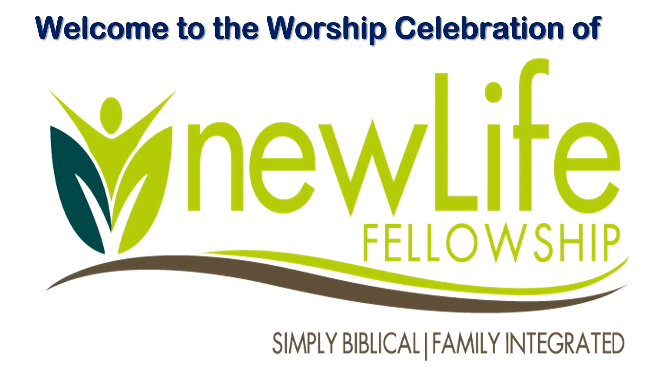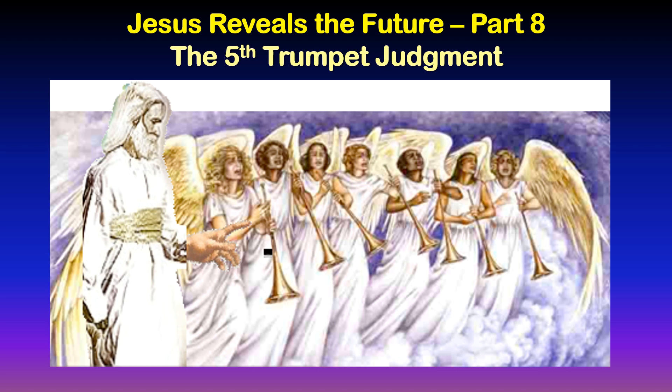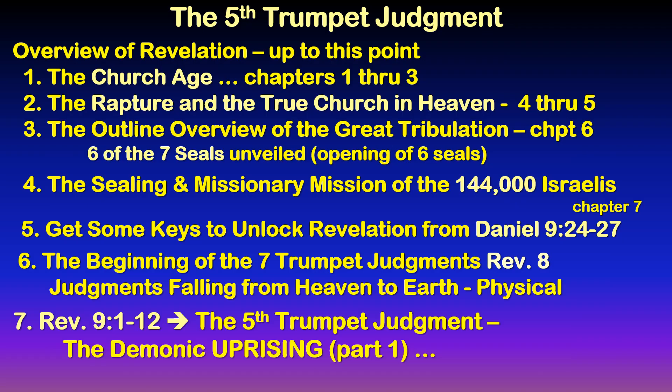We have been studying through the book of Revelation. We started out with the church age — the first three chapters — then the rapture and the true church in heaven in chapters 4 through 5. Then we see an overview of parts of the great tribulation, starting with the rise of the Antichrist around chapter 11. Chapter 7 covers the sealing of the 144,000. Then we went back to Daniel chapter 9 to get some keys to unlock concepts and ideas for the great tribulation.